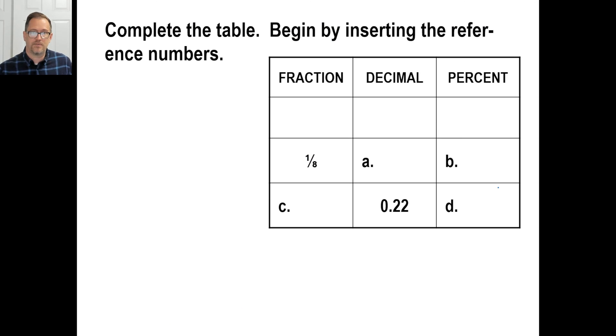Your practice problem on page 179, let's take a look at that. And let's just do it. We can just pause it and do it. You can insert the reference numbers if you want. That's 51 over 100. The decimal is 0.51. The percent is 51%. The fraction is 1/8. Well, you know what? Let's do the bottom one first here. 0.22. It's easier. The decimal is 0.22. That means the percent is 22%, right? The fraction will be 22 over 100. Now, you could reduce that to 11 over 50 if you wanted to.